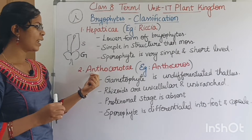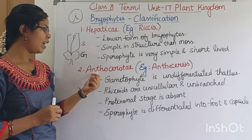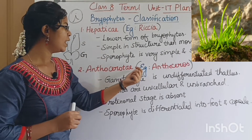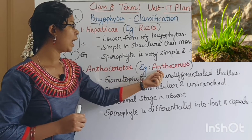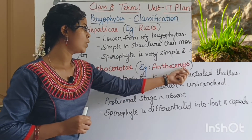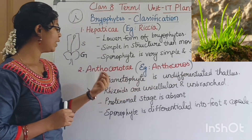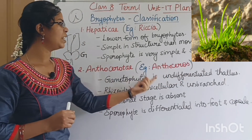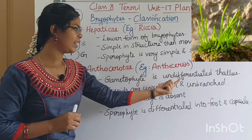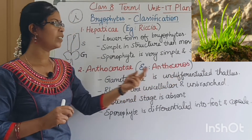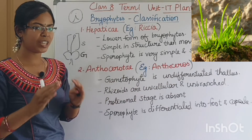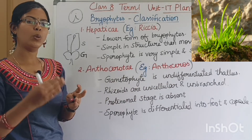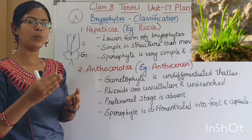The second class is Anthocerotae. The example is Anthoceros. Here, the gametophyte is an undifferentiated thallus — no stem, no leaf, no root.